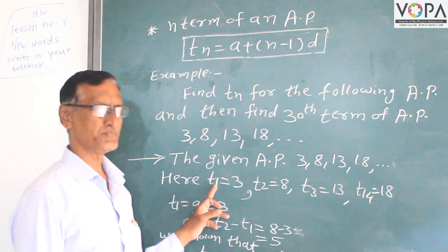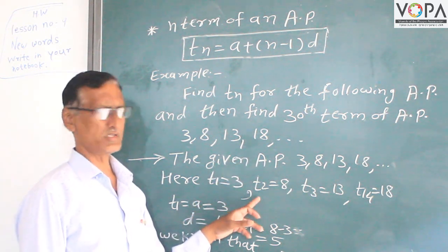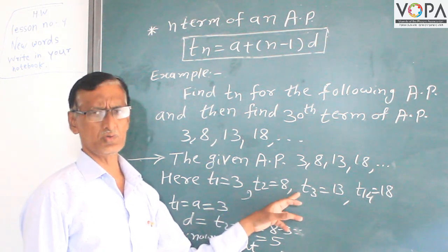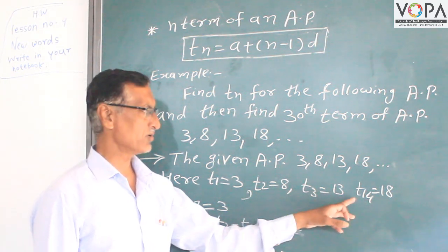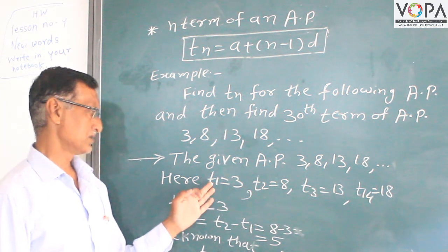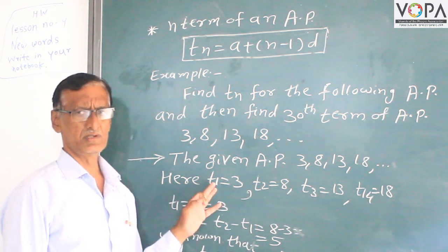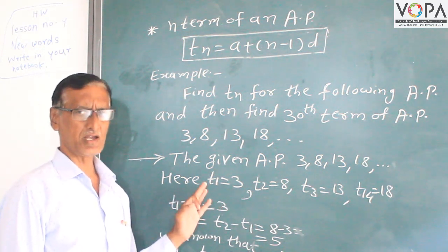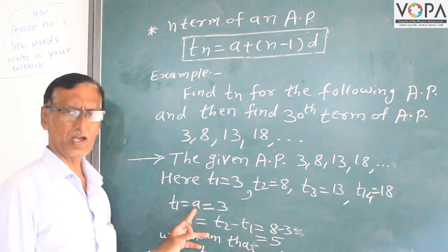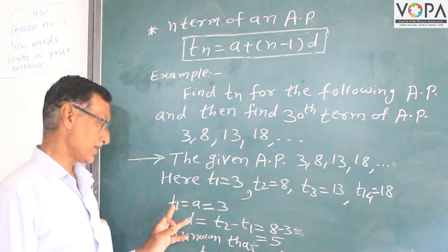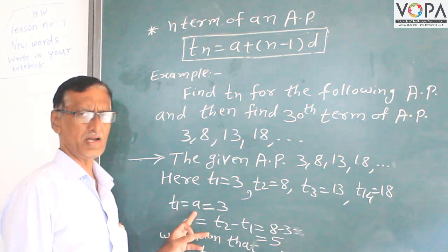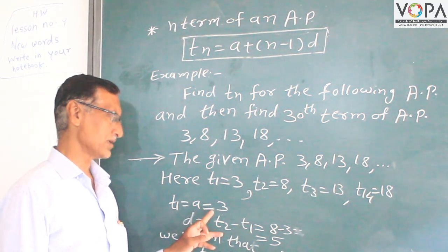Therefore, t1 is equal to 3, t2 is equal to 8, t3 is equal to 13, and t4 is equal to 18. The first term t1 is denoted by a. So a is equal to 3.